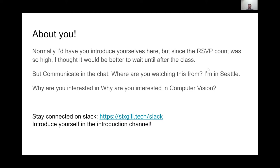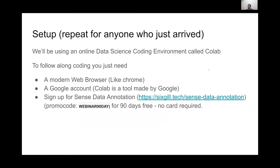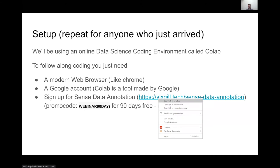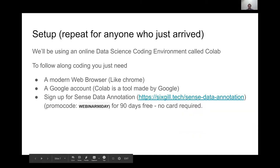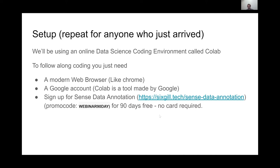Setup repeat for anyone who just came in: you just need a modern web browser and a Google account for Google Colab. Then sign up at the link for the labeling product and use the promo code WEBINAR90DAY — all caps — for 90 days free. Easy sign-up, just put in your email and promo code, no card required.